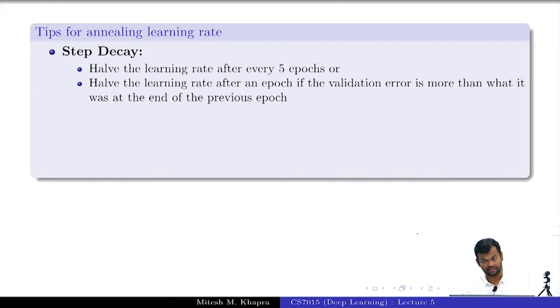This second one is what my favorite is and I typically use this. What I do is I compute the loss after epoch t. I run epoch t plus 1, I compute the loss again. If the loss has increased, what will I do? I will just throw away all the updates that I have made in this epoch. I will decrease the learning rate and start this epoch again. After epoch t I will save my model, I will save all the w values that I have computed and let it run for one more epoch.